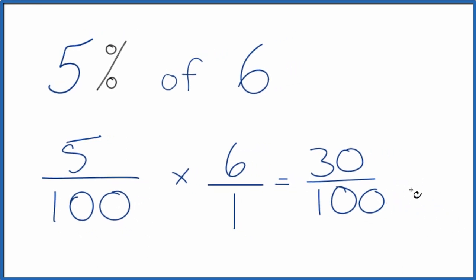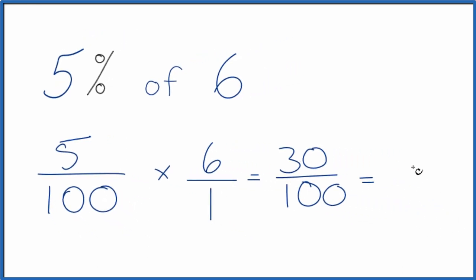So we have 30 over 100. If you divide 30 by 100, you get 0.3. So 5% of 6 equals the decimal 0.3. You could call it 0.30 as well.